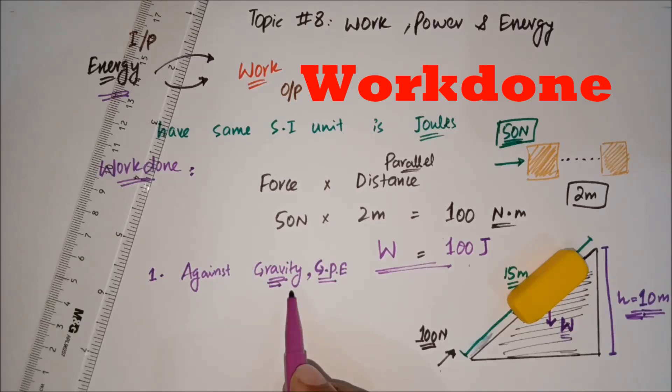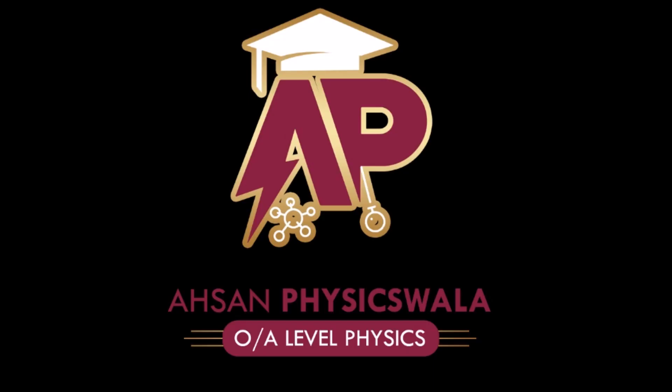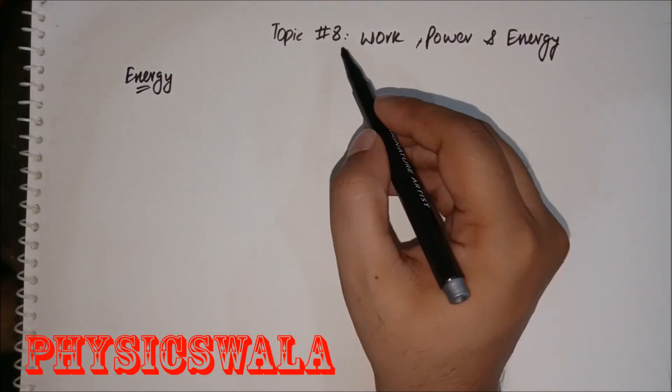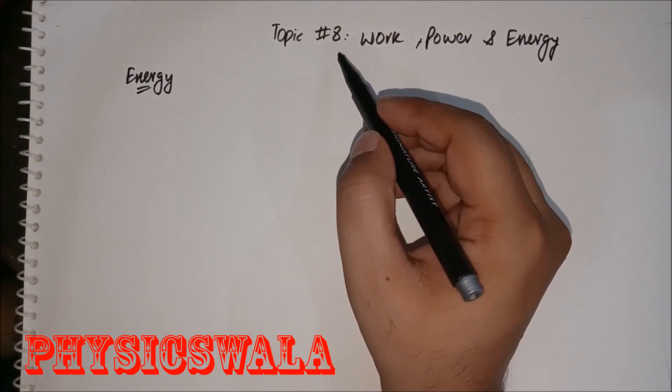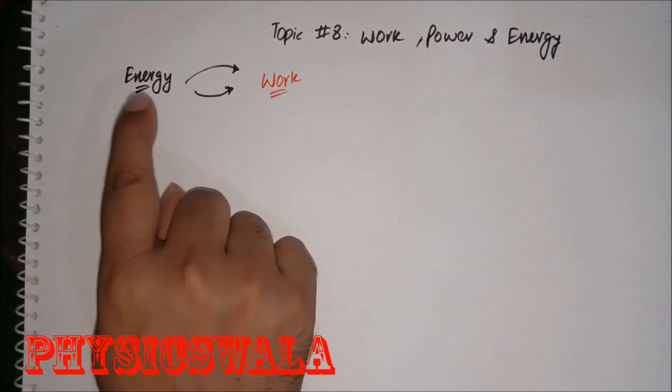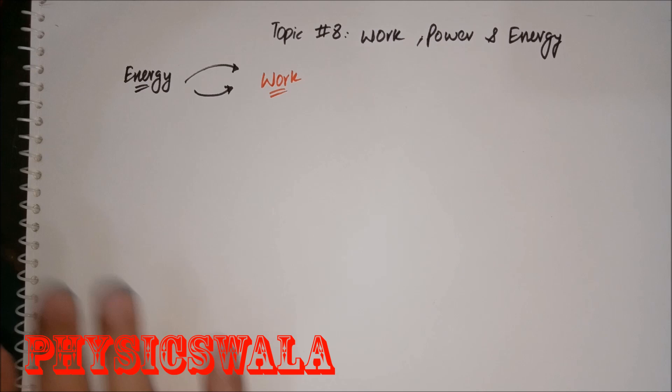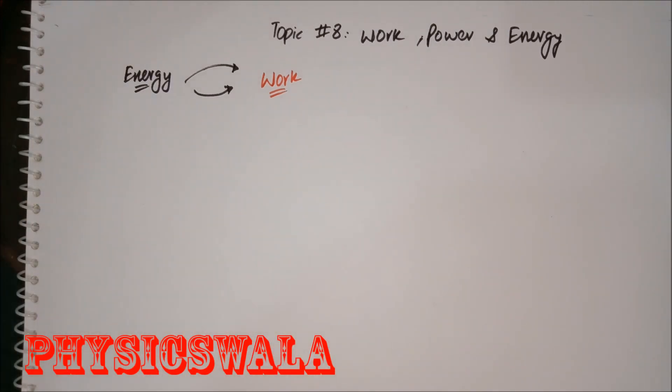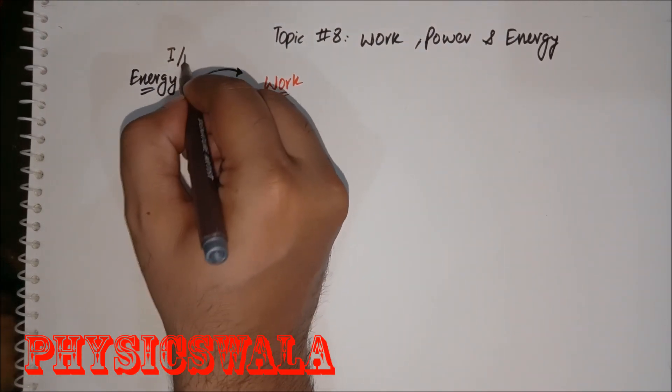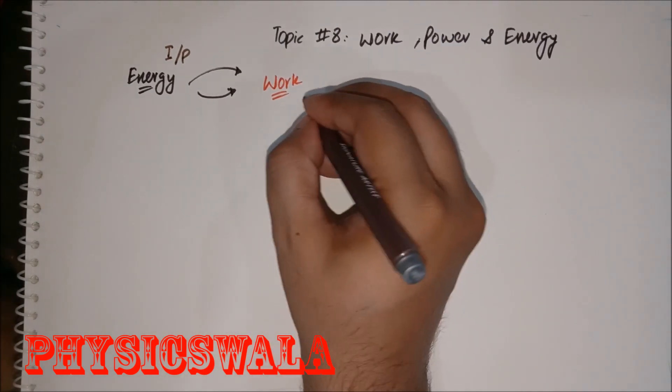All right students, we are starting topic number eight according to Physics 5054. The topic is work, power, and energy. Energy and work are cousins, they are two sides of the same coin. I like to call energy the input and work the output.